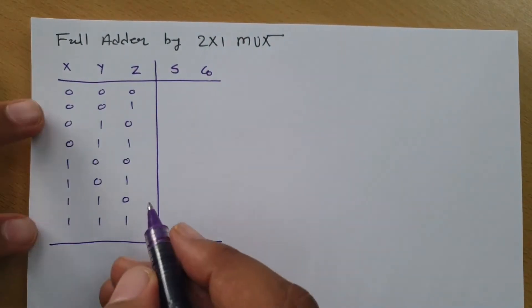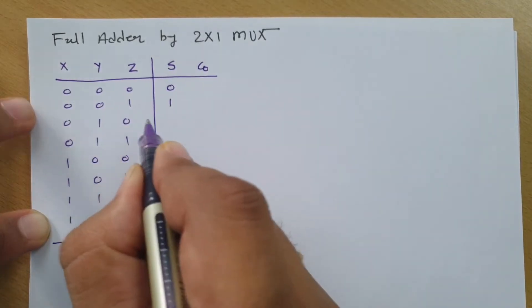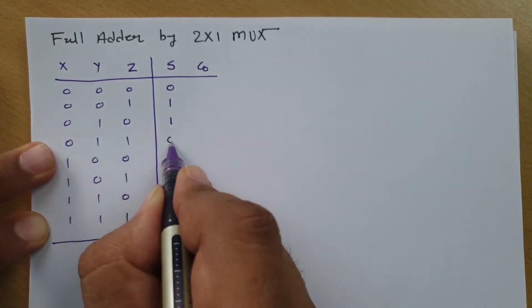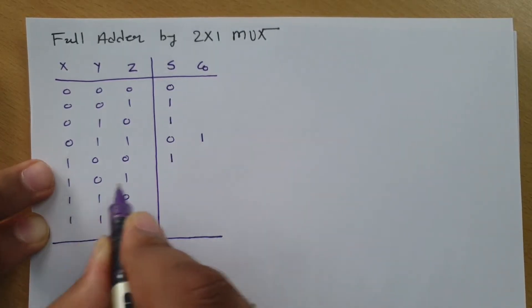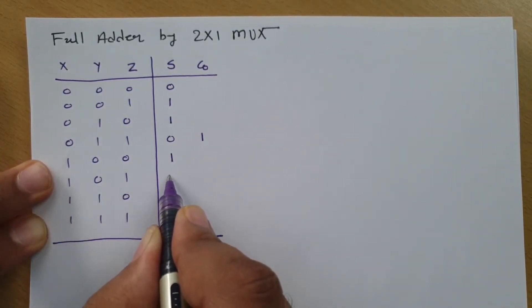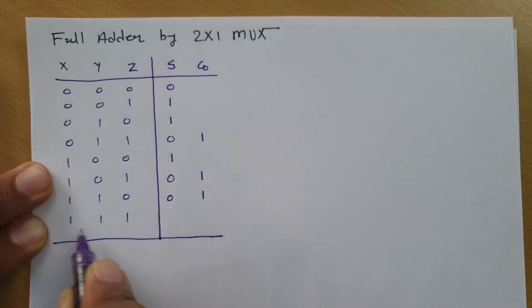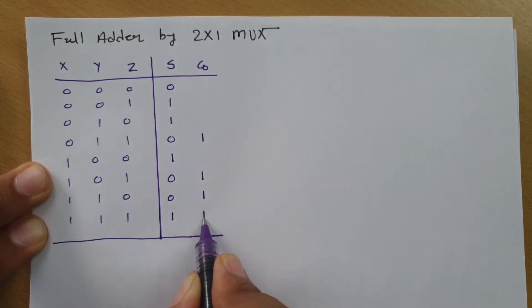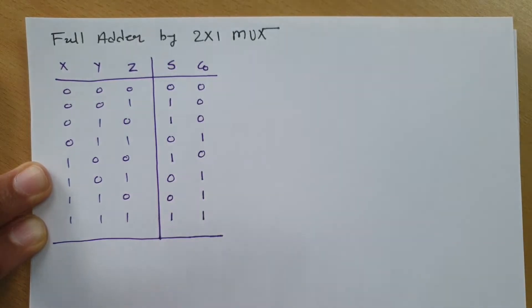Here you can see: sum is 0; here it is 1; here it is 1; here it is 1 plus 1 carry 1; here it is 1; here it is 1 plus 1, that is 0 carry 1; here it is 1 plus 1, that is 0 carry 1; here it is 1 plus 1 plus 1, that is three, meaning 1 and carry 1. And the carry values are filled in accordingly.